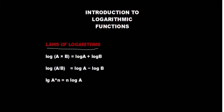The first law: the log of a product A times B is equal to the sum of log A plus log B. For example, log of 2 times 3 is equivalent to log of 2 plus log of 3. This is what the first law means.